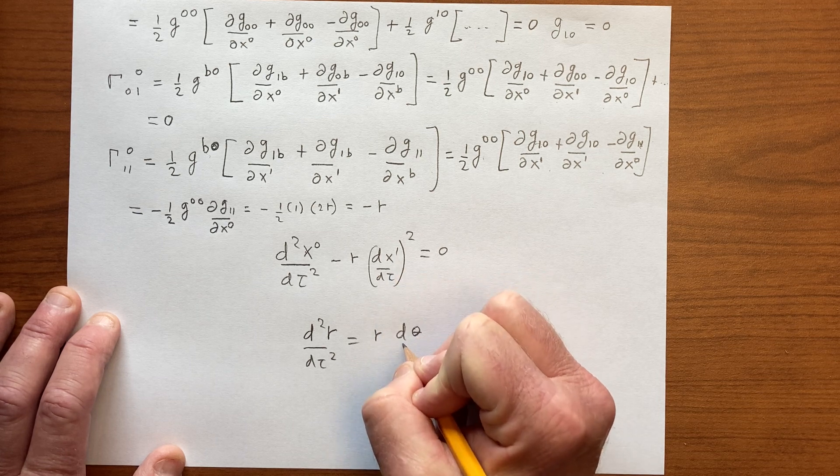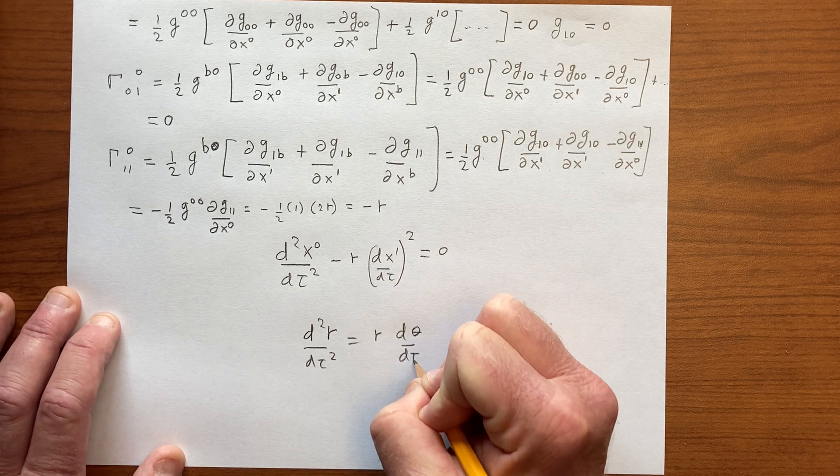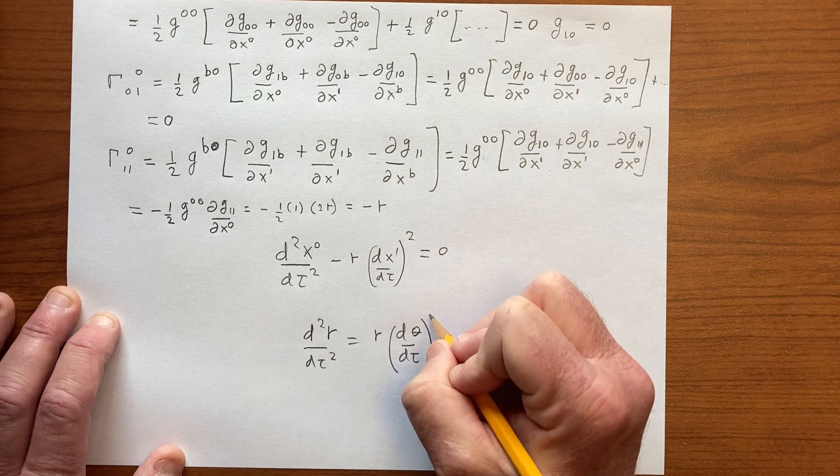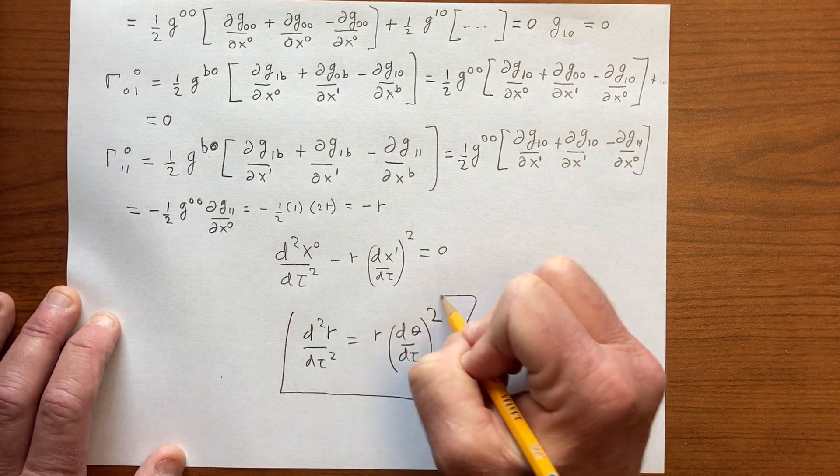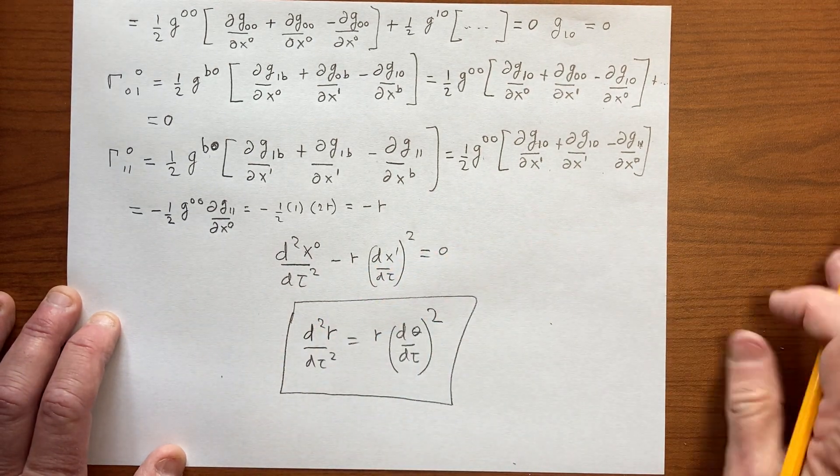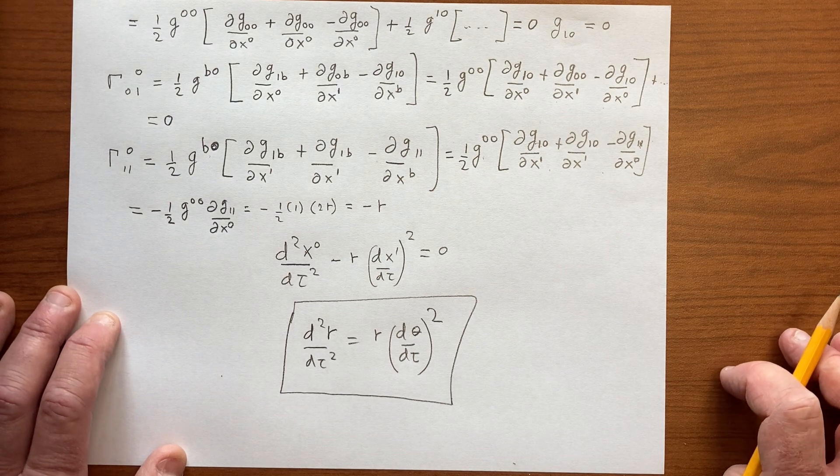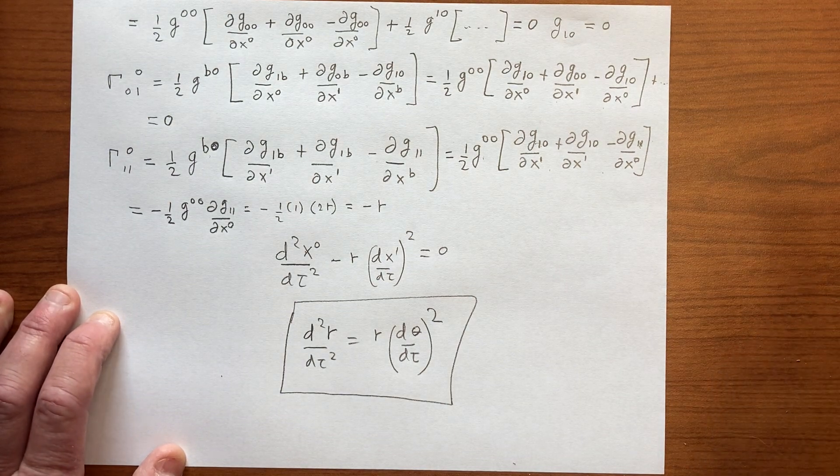And so our equation becomes second derivative of r in tau equals r. Now x^1 is theta, dθ/dτ squared. So that's the first equation that comes to us in our theta coordinates.